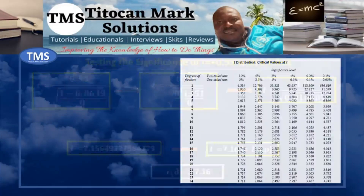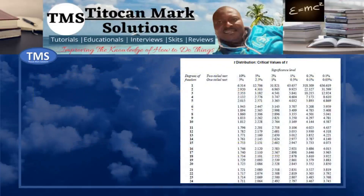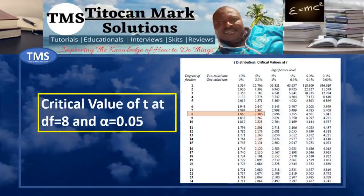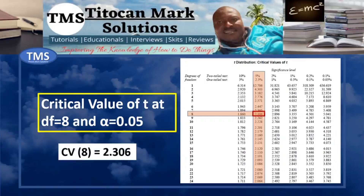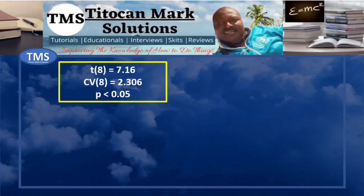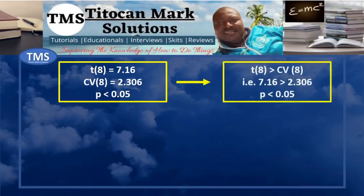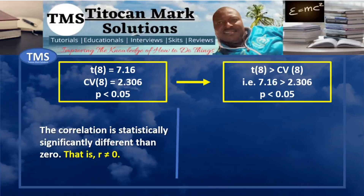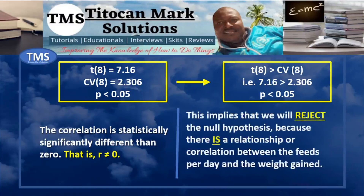Now turn to the student's t distribution table to obtain the critical value of t. At 8 degrees of freedom and at 5% significance level, the critical value of t is 2.306, obtained at the point of intersection. This means that at 8 degrees of freedom and significance level of 0.05, the t-value is 7.16 while the critical value is 2.306. Following the condition for rejecting or accepting the null hypothesis, since the t-value is greater than the critical value, the correlation is statistically significantly different than 0 — i.e., rho is not equal to 0. We therefore reject the null hypothesis and accept the alternate hypothesis because there is a relationship between the feeds per day and the weight gained.